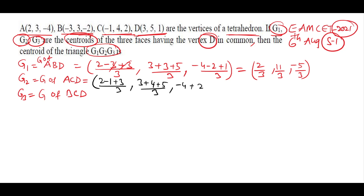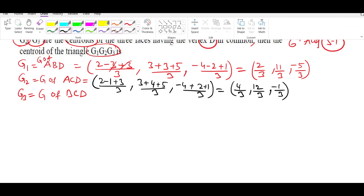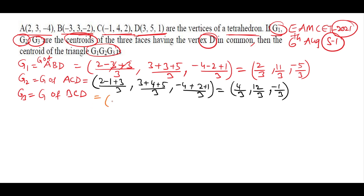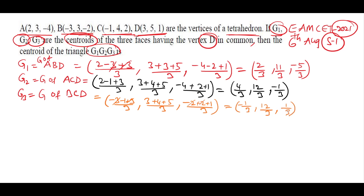Finding G2: centroid of triangle ACD. x = (2 - 1 + 3)/3 = 4/3; y = (3 + 4 + 5)/3 = 12/3 = 4; z = (-4 + 2 + 1)/3 = -1/3. So G2 = (4/3, 4, -1/3). Finding G3: centroid of triangle BCD. x = (-3 - 1 + 3)/3 = -1/3; y = (3 + 4 + 5)/3 = 12/3 = 4; z = (-2 + 2 + 1)/3 = 1/3. So G3 = (-1/3, 4, 1/3).